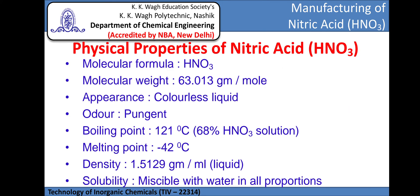The physical properties of nitric acid: the molecular formula is HNO₃ and its molecular weight is 63.013 grams per mole. It is a colorless liquid with a pungent odor. Its boiling point is 121 degrees Celsius for 68 percent concentration, and its melting point is minus 42 degrees Celsius, meaning at normal temperature nitric acid is in liquid state. Its density is 1.5129 grams per mL, and it is miscible with water in all proportions.